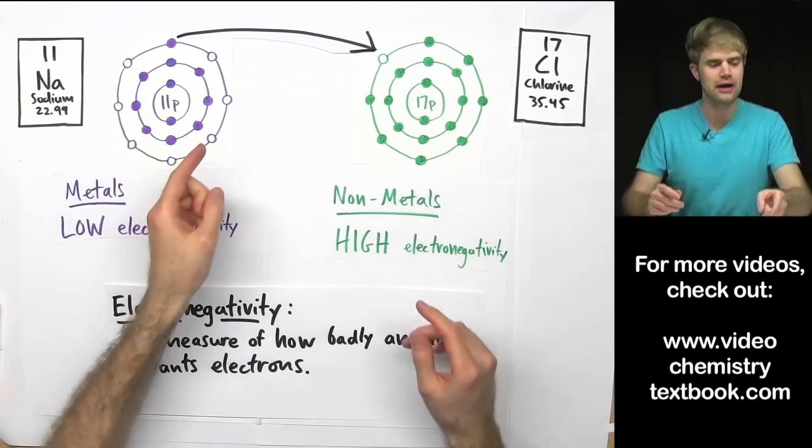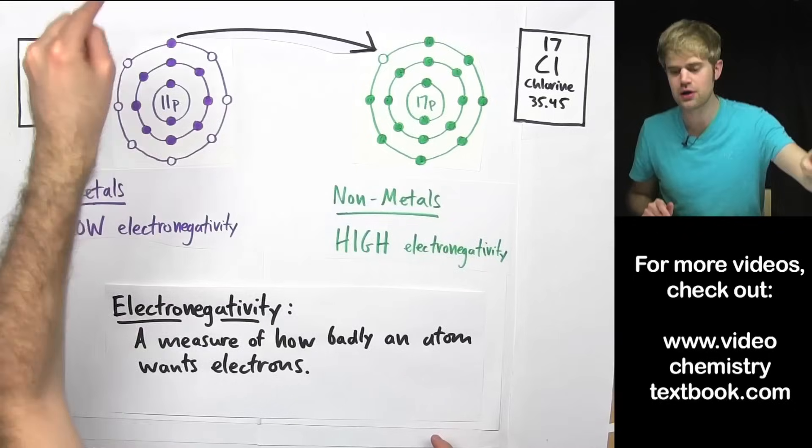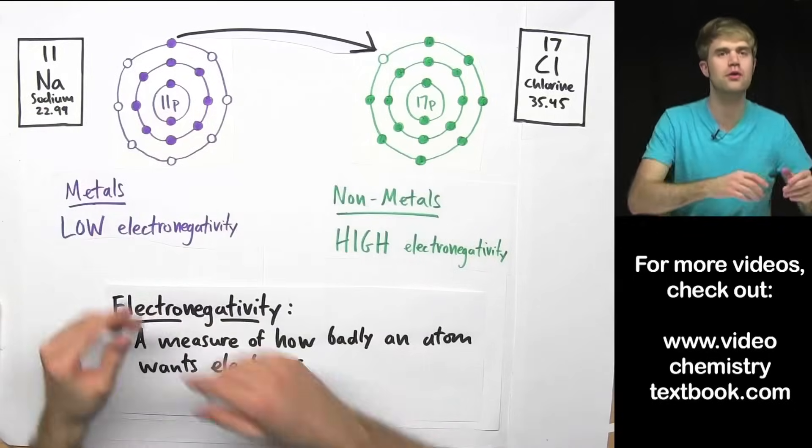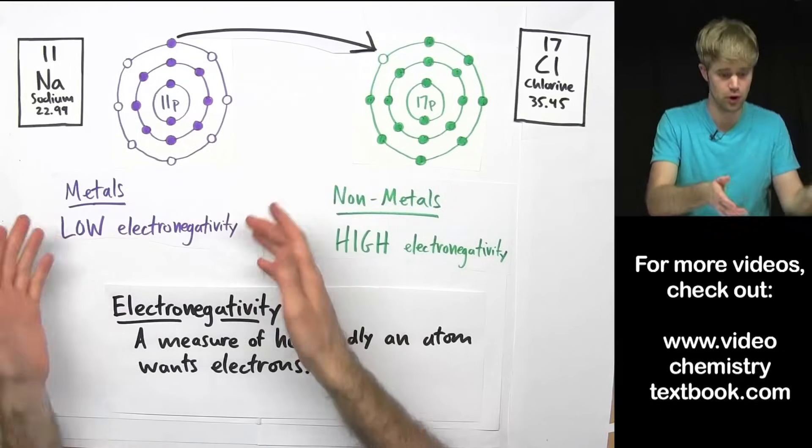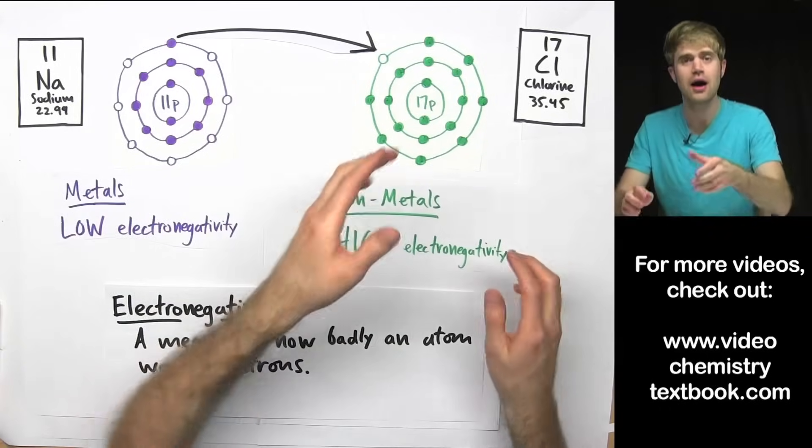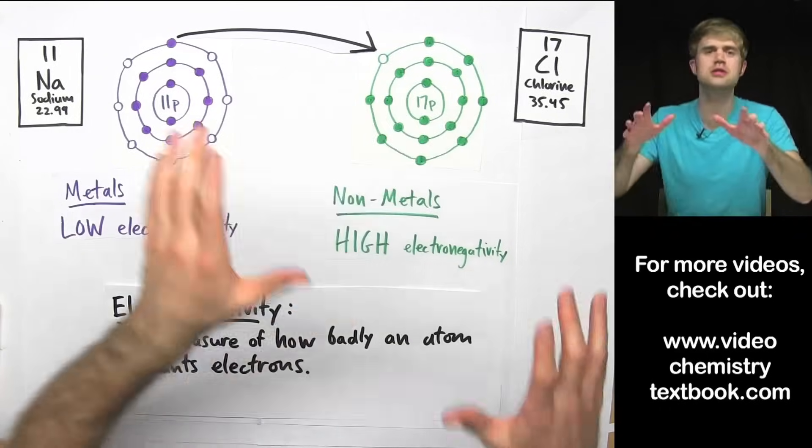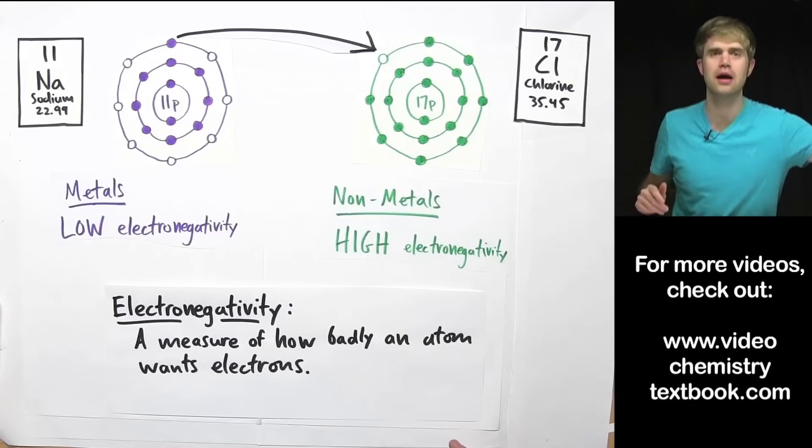So that's why electrons move from sodium to chlorine and not the other way around. They move from the atom with low electronegativity, low greediness, to the atom with high electronegativity.